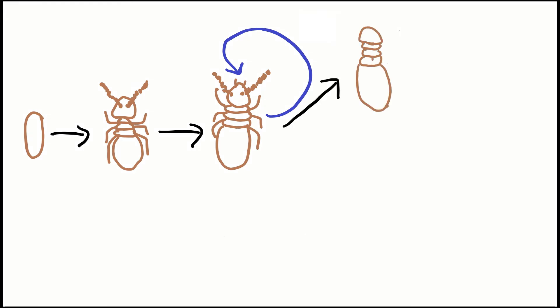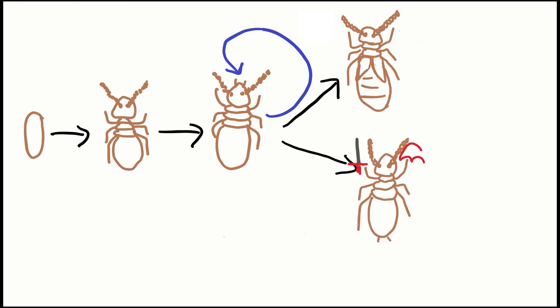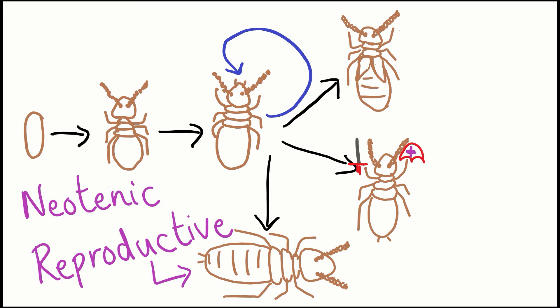The worker also may molt progressively, which means into the next life stage. For a worker termite, there are three options. One, molting into a nymph with wing buds. Two, molting into a pre-soldier nymph. Or three, development into a reproductive replacement over the course of one or two molts, referred to as a neotenic reproductive.